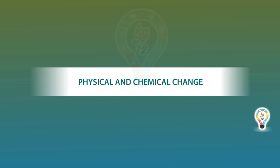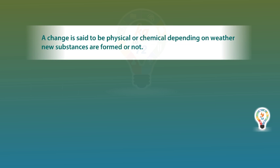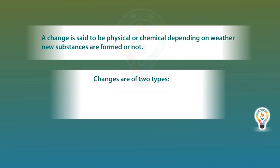Physical and Chemical Change. A change is said to be physical or chemical depending on whether new substances are formed or not. Changes are of two types: physical change and chemical change.